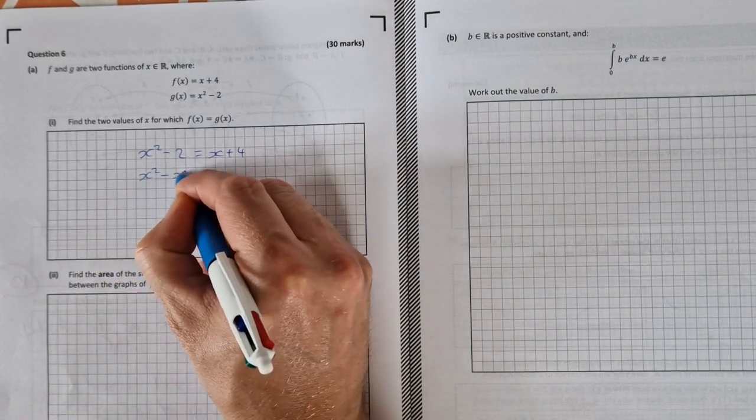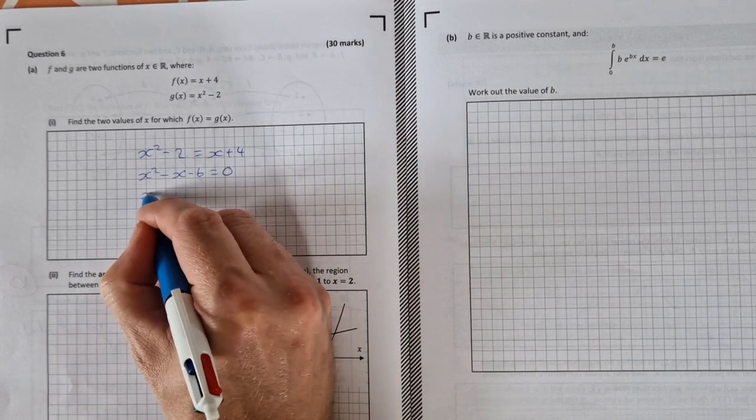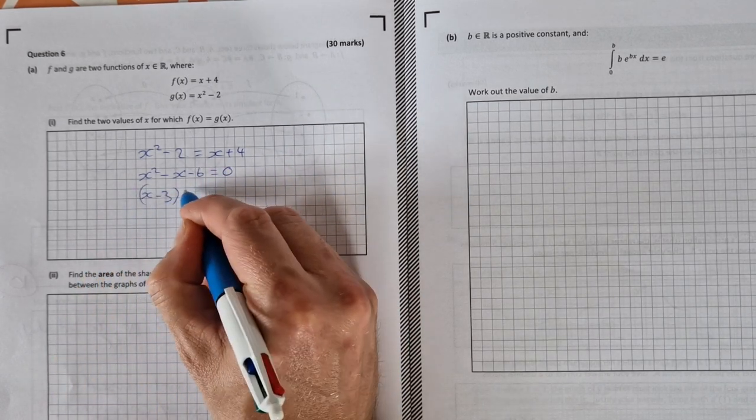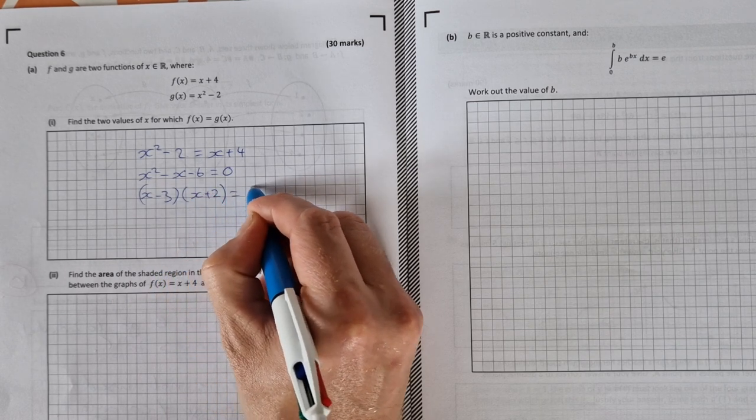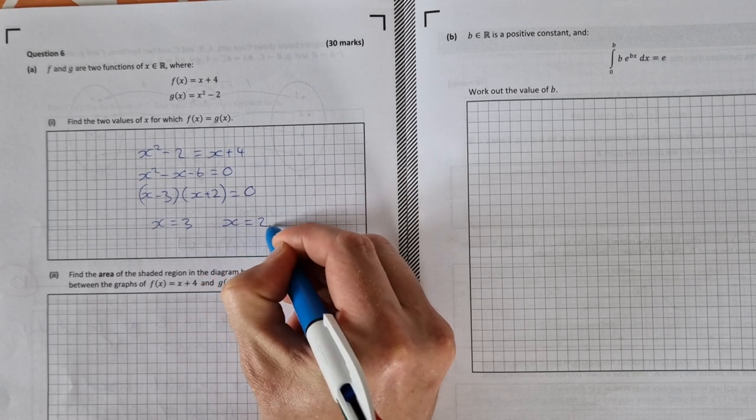Factorize that, it'll be (x - 3)(x + 2) = 0. So that means x = 3 and x = -2.